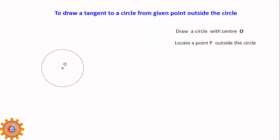The second method is to draw a tangent to a circle from a given point outside the circle. Draw a circle with center O and locate a point P outside the circle. Draw a line OP, and this OP has to be bisected to find the center of OP.